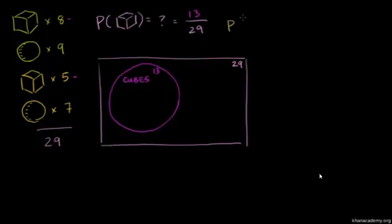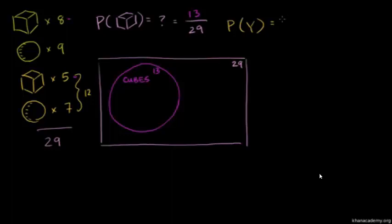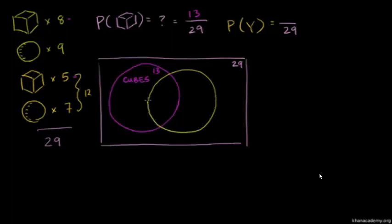Now let's ask a different question. What is the probability of getting a yellow object — either a cube or a sphere? We have 5 plus 7, so there are 12 yellow objects in the bag. We have 29 equally likely possibilities, and 12 meet our criteria. So the probability of getting a yellow is 12 over 29.